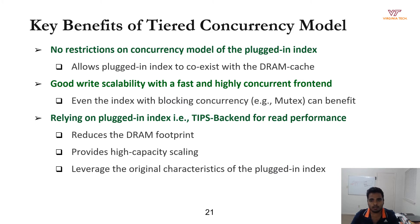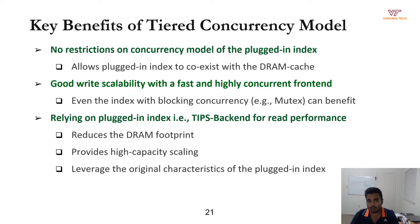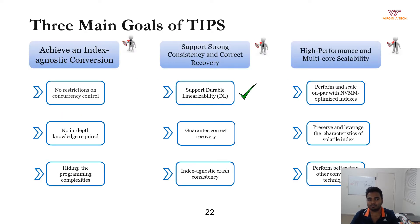One of the key benefits of tiered concurrency is that it allows TIPS to embrace and support different concurrency models by allowing the concurrency model of the plugged-in index to co-exist with the DRAM cache. If the plugged-in index uses a mutex as its concurrency control, it can still take advantage of the DRAM cache to process reads and writes concurrently, achieving good performance and scalability. The tiered concurrency model also leverages the original characteristics of the volatile index for performance — if the plugged-in index supports concurrent reads and writes, the overall performance can further improve.